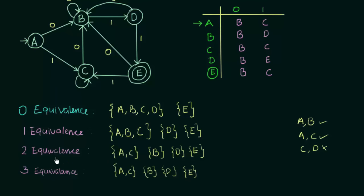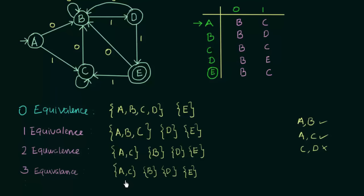If you observe carefully, the two equivalence and three equivalence rows give the same result: {A,C}, {B}, {D}, {E}. When two consecutive rows give the same result, it is time to stop the process. If you continue for four, five, or N equivalences, you will always get this same answer. So we can stop and draw the minimal DFA. We see that A and C combine into one state, so we have four states total instead of the original five.